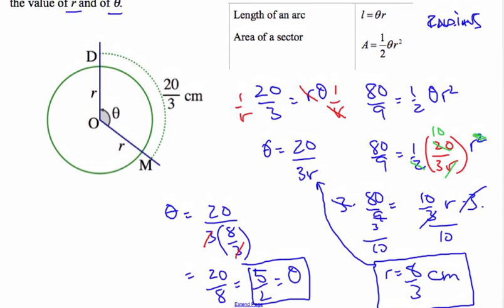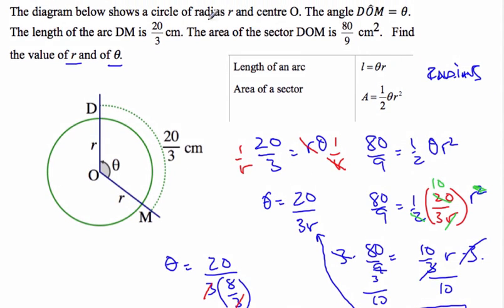So the key to this problem is, you have two pieces of information, arc length and the area. Two variables that you don't know. So you get two variables, two equations, and then use simultaneous equation methods.